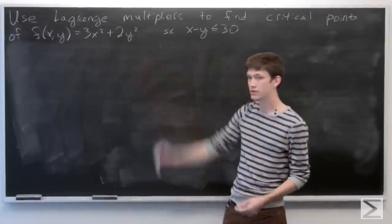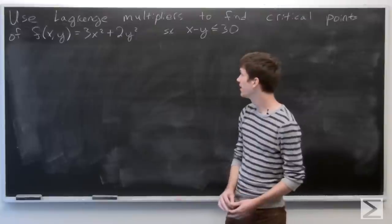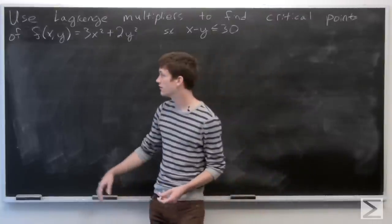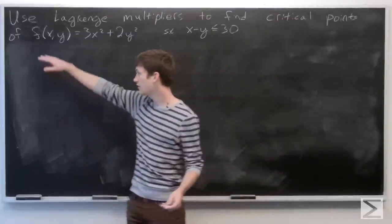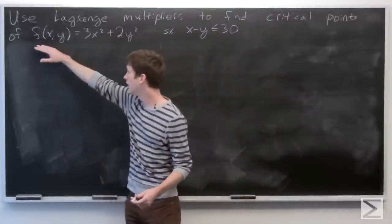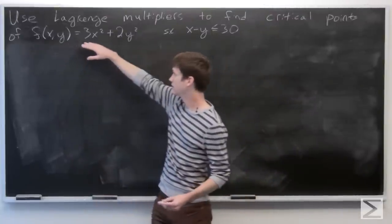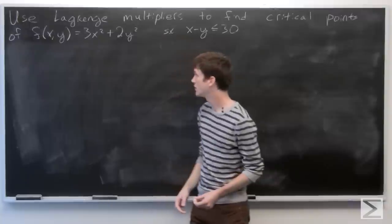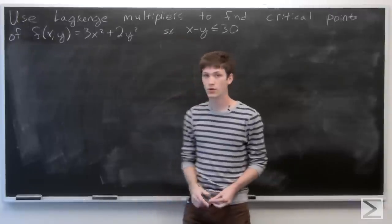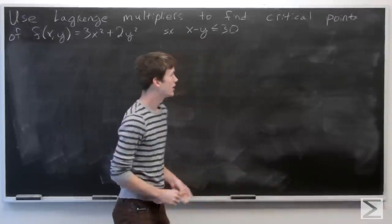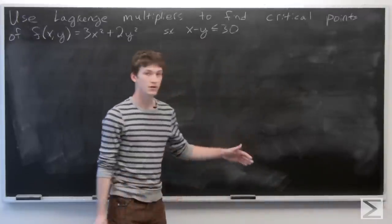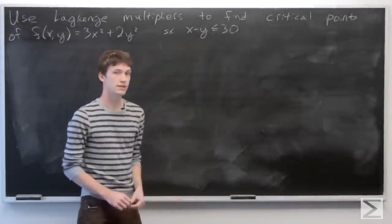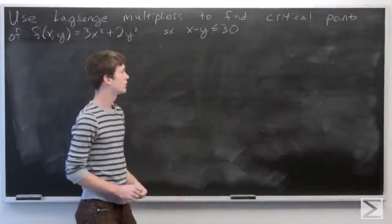In this problem, we're asked to use Lagrange multipliers to find the critical points of our function f of x, y is equal to 3x squared plus 2y squared, subject to the constraint x minus y is less than or equal to 30.